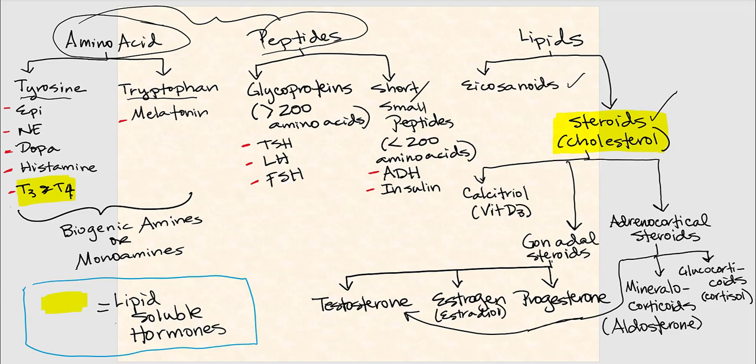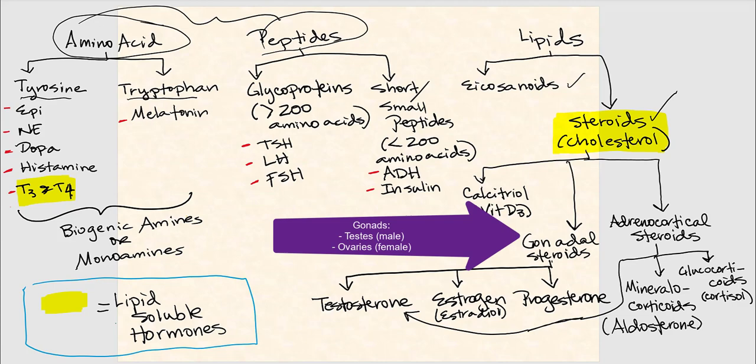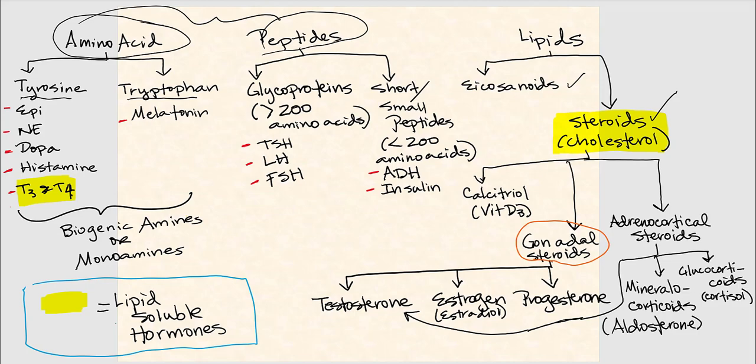Looking at the cholesterol-derived hormones, we have vitamin D3 active form called calcitriol. We have gonadal steroids, which come from the gonads — testes in males and ovaries in females. These gonadal steroids are testosterone, estrogen, and progesterone.